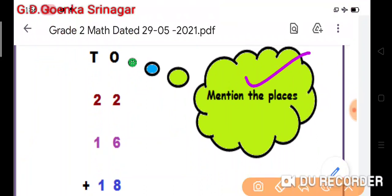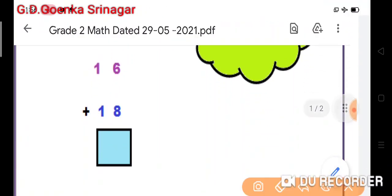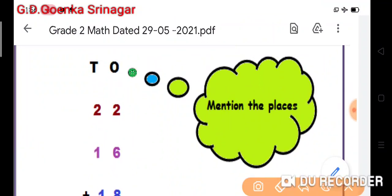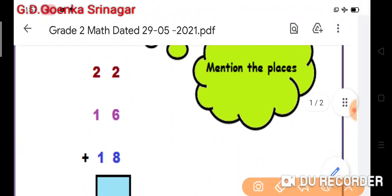The first step is to mention the places. We will first write ones and tens. Then put the numbers in their respective houses, starting from the ones house. I wrote here 2, then another 2 is in tens place. Then I wrote here 6 in ones place and 1 in tens place. Then I'm having 18: 8 is in ones house and 1 is in tens house.